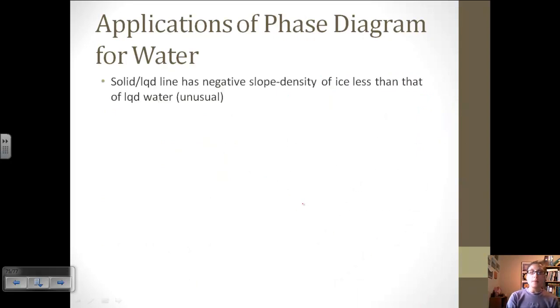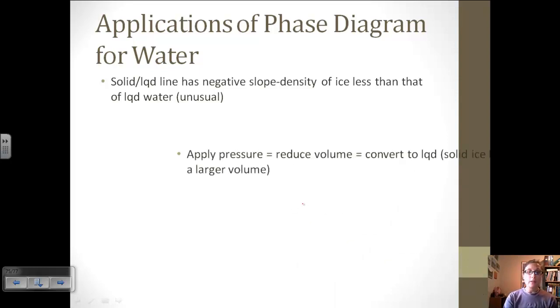Let's look at some applications of the phase diagram for water. If you notice from the phase diagram, the solid-liquid line has a negative slope. What this means is that the density of ice is less than that of liquid water, and this is very unusual. For most substances, the density of the solid is much greater than the density of the liquid. But that's what makes water so unique and gives it some really neat properties that make it this essential compound for life.